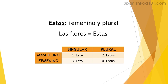In Spanish we have four options depending on whether the noun is masculine, feminine, singular, or plural. Masculine singular: 'este.' Masculine plural: 'estos.' Feminine singular: 'esta.' Feminine plural: 'estas.' Let's practice the pronunciation: este, estos, esta, estas.